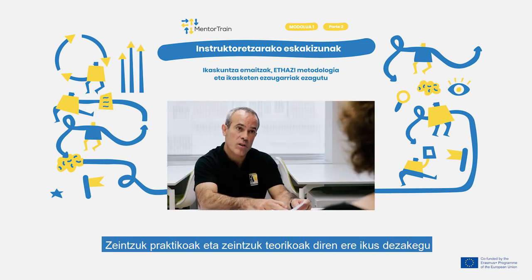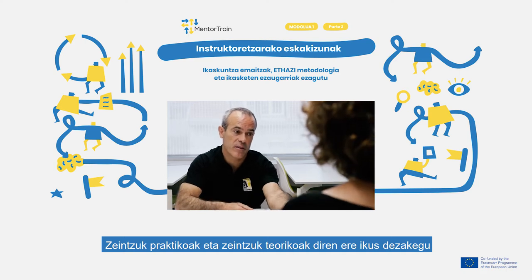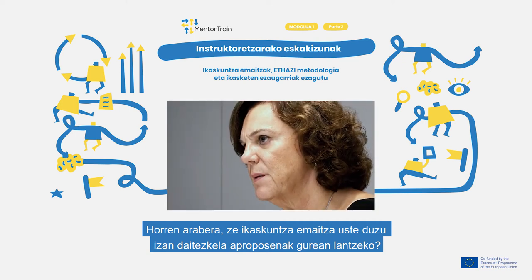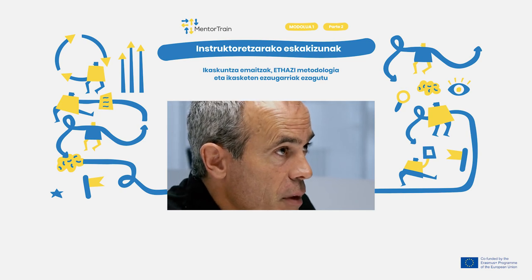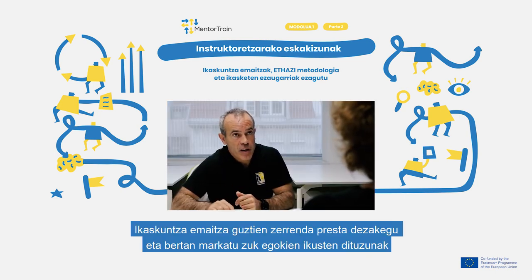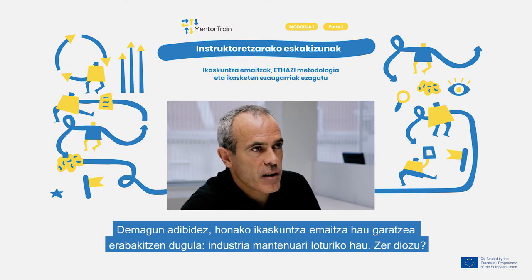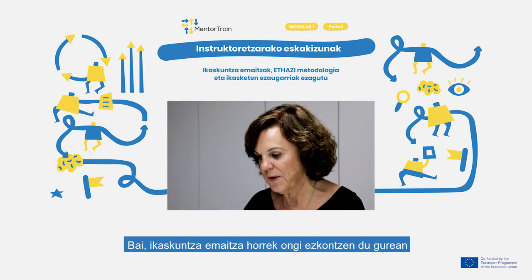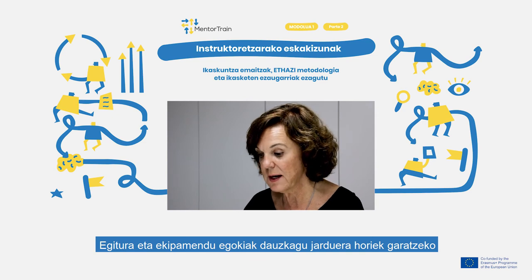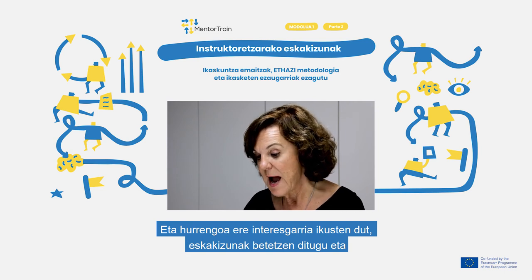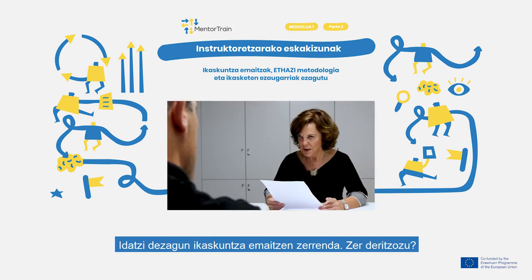We can also see which ones are theoretical and which ones are practical. According to that, which learning outcomes do you think the apprentice should develop with us? It depends on the suitability and resources of your company. We can write a checklist with the different learning outcomes and you can tick the ones you think fit better in your company. Let's say, for example, that we decide to develop this learning outcome related to industrial maintenance. I think that one could fit at the maintenance department — we have adequate structure and equipment for developing these activities, and I think that the next one could also be interesting. We also have what is requested. Let's write that checklist you mentioned.